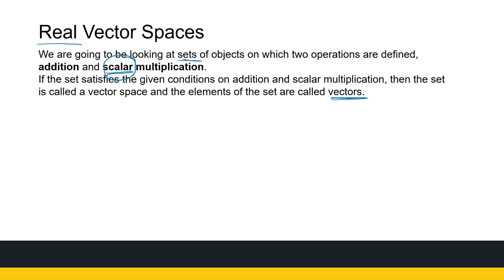If you've had any encounters with vectors, your first encounter will probably be with displacement vectors — vectors with direction and size, like the wind or the speed of an object. But we are getting way more general here. Do not think of displacement vectors when we think of vector spaces. It's simply a set of objects with two operations meeting given conditions, and the elements of that set are called vectors.